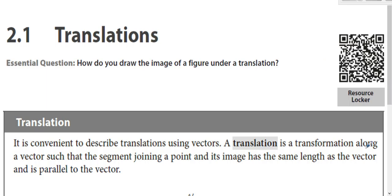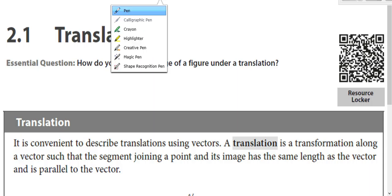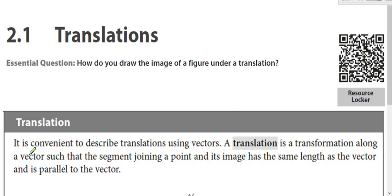A translation is a transformation along a vector, kind of the key word there, along a vector such that the segment joining a point and its image has the same length as the vector and is parallel to the vector.